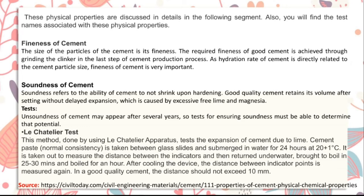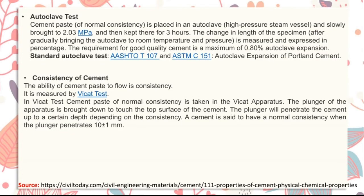Soundness of cement refers to the ability of cement to not shrink upon hardening. Good quality cement retains its volume after setting without delayed expansion, which is caused by excessive free lime and magnesia. Tests are available to determine soundness. Consistency refers to the ability of cement paste to flow, and it is measured by the Vicat test.